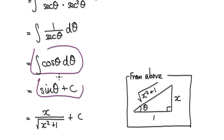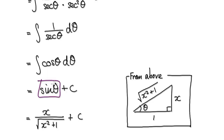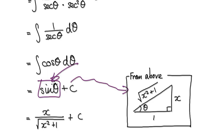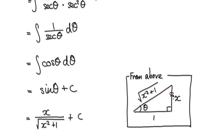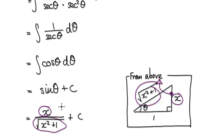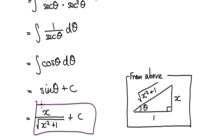So integrating this will give you this. But the answer would be sine theta. But we don't want the answer in terms of sine theta. So we would go back to the original diagram. We need to translate this sine theta. So sine theta is opposite over hypotenuse. So this would be your final answer.